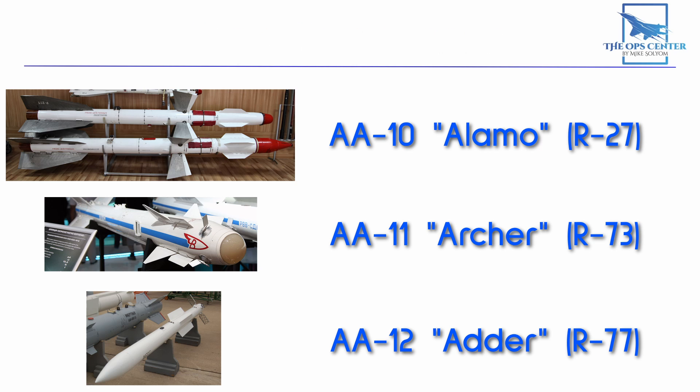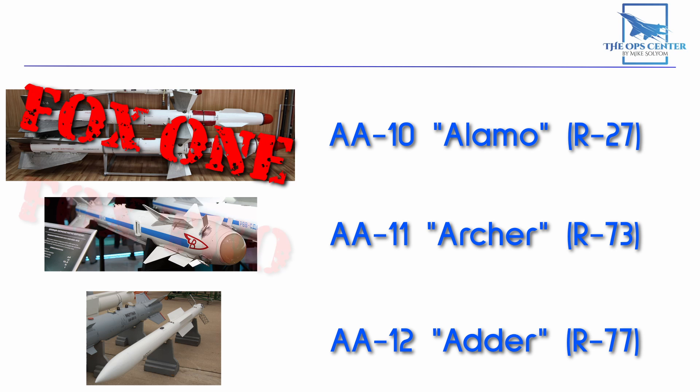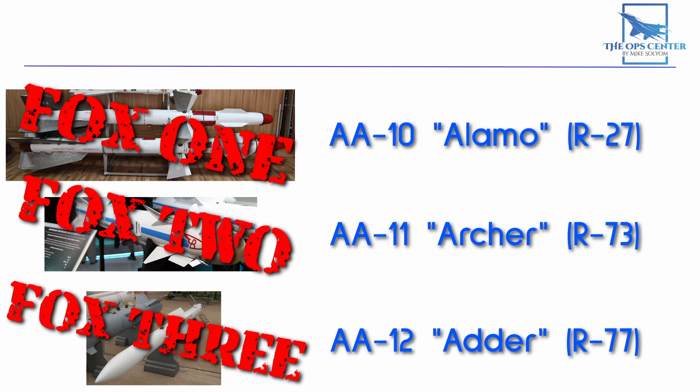If you have trouble remembering the difference between the three missiles here, there's a little trick that helps me keep them straight. Think of them as FOX-1, FOX-2, and FOX-3, which are the NATO brevity codes for air-to-air missile use.